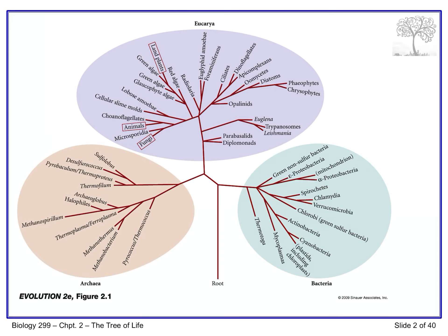Domain is the largest taxonomic category we have. We have domain Eukarya — all eukaryotic organisms — domain Archaea, all bacterial or prokaryotes, and a second prokaryotic domain, domain Bacteria. Domain Bacteria contains all the run-of-the-mill bacteria we normally deal with. The archaeans are also referred to as extremophiles — bacterial species that can live in very extreme environments. And with Eukarya we have all eukaryotic organisms: fungi, animals, land plants, and more.